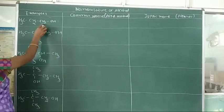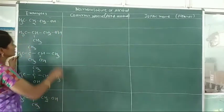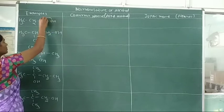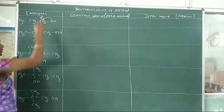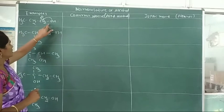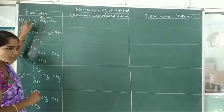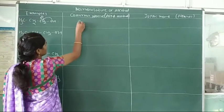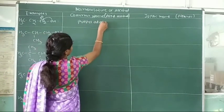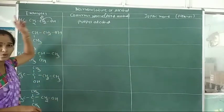First example: CH3-CH2-CH2OH. In the common system, the hydroxy group is attached to a primary carbon atom. This compound has 3 carbon atoms, that is, the parent alkyl group is propyl. So the common name of this compound is propyl alcohol.